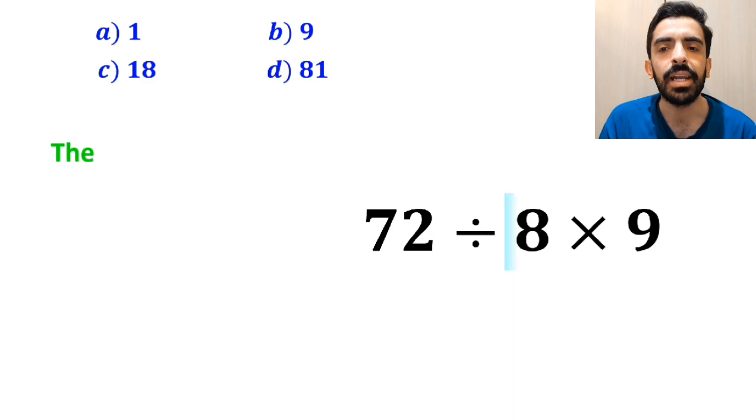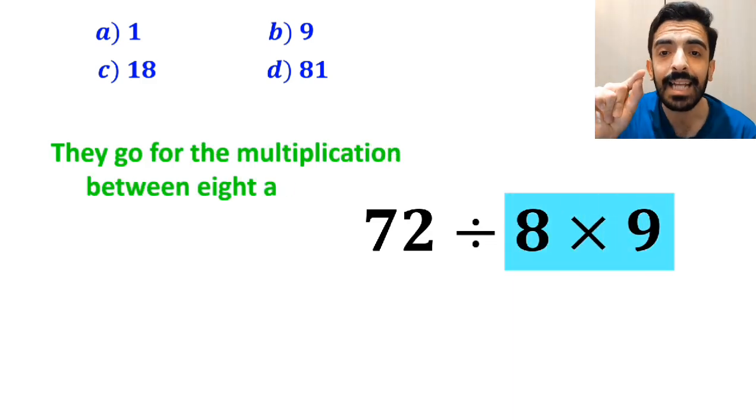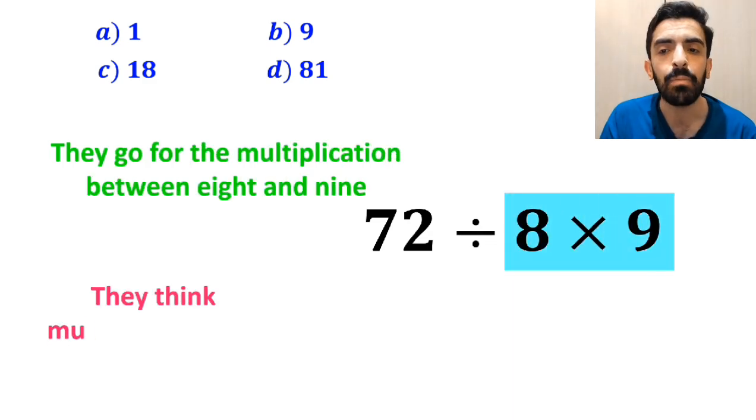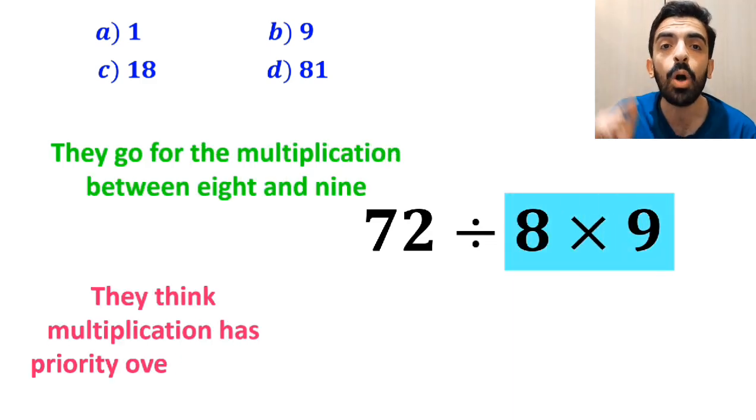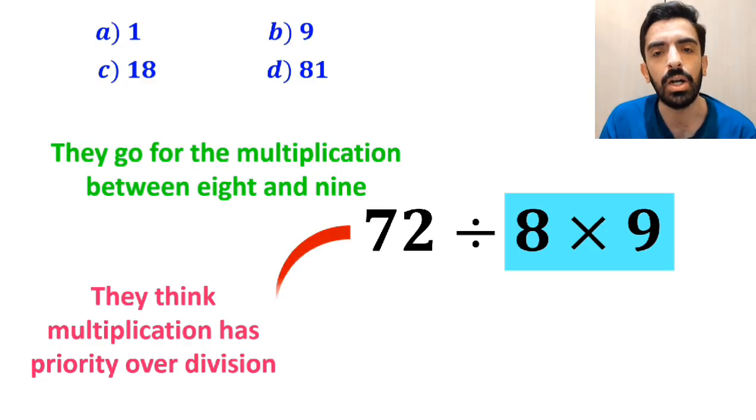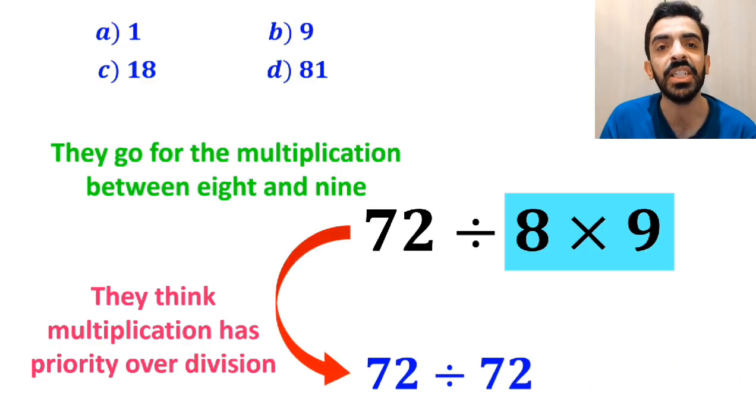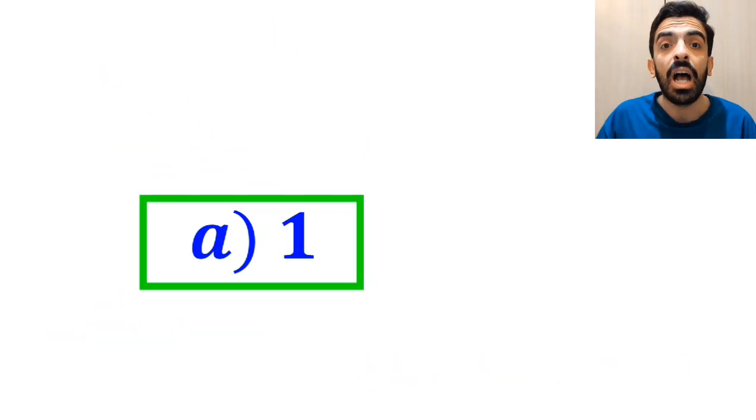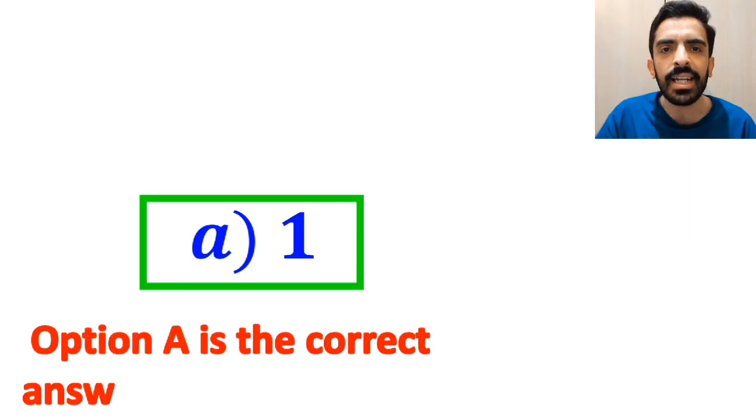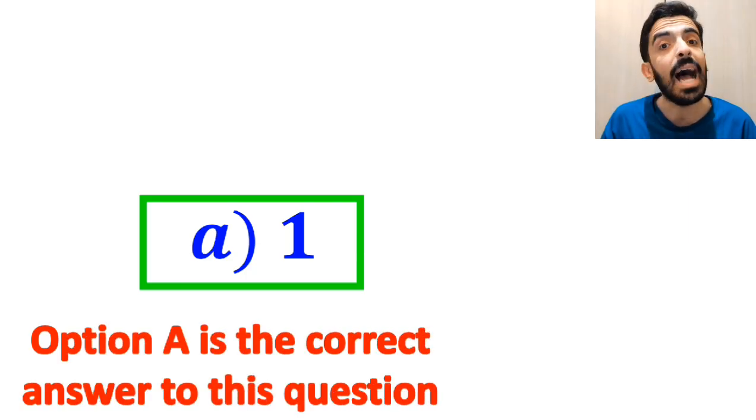In the next step, they go for the multiplication between 8 and 9 because they think multiplication has priority over division. So this expression simplifies to 72 divided by 72 which finally gives them the answer 1. And immediately, they quickly say that option A is the correct answer to this question.